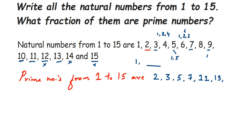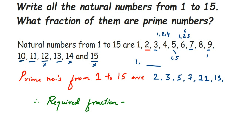So how many prime numbers did we get? We got 6 prime numbers between 1 and 15. Now let's write down the fraction. The required fraction will be equal to: out of 15 total numbers, 6 are prime numbers, so the fraction will be 6 by 15. That's it — this question was simple. I hope it's clear. In case you have any other question, you can drop a comment. Thank you so much for watching.